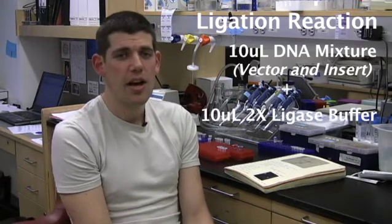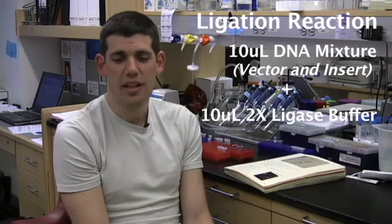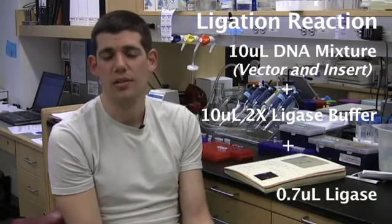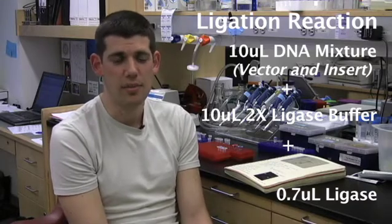Add 0.7 microliters of ligase, let it sit for five to ten minutes at room temperature, put it on ice, and continue with the transformation. That's really easy.